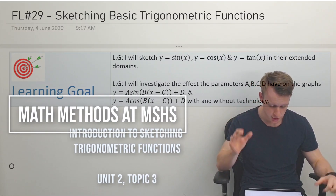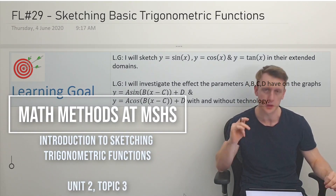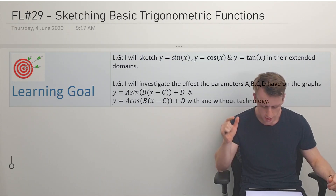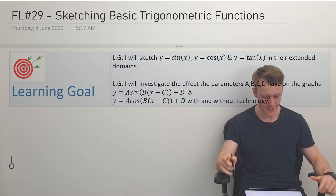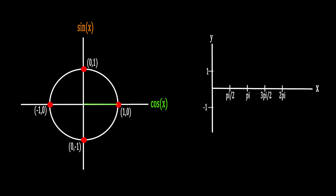In today's lesson we're going to have a look at sketching trigonometric functions. We've had an initial look at the unit circle and determining when trigonometric functions — that is sine, cos and tan — are positive or negative. Now we're going to have a look into sketching trigonometric functions.